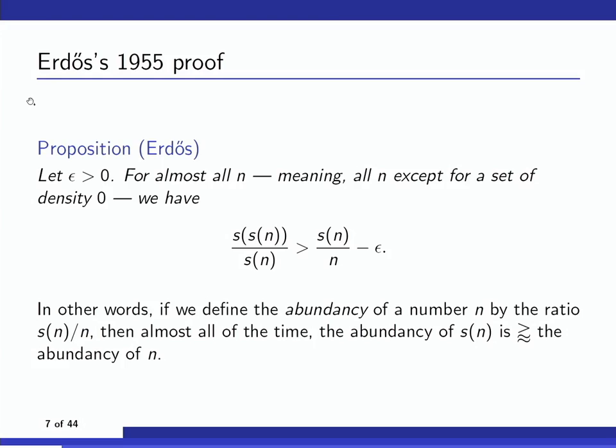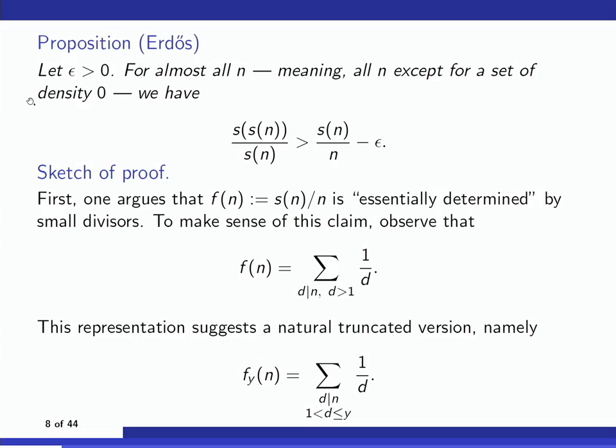Let me give a name to this function s(n)/n — I'll call that the abundancy of the number. The ancients called a number abundant if s(n)/n was bigger than 1. This proposition says that almost all of the time, the abundancy of s(n) is at least approximately the same as the abundancy of n — the abundancy doesn't tend to go down very much as you apply s.